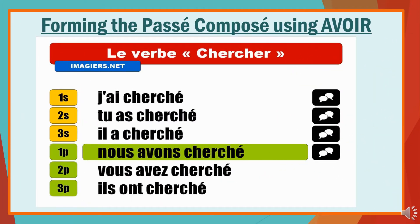Now that we've learnt how to form the participle as well as the exceptions, most verbs form their passé composé using avoir as the auxiliary. Let's try with chercher — a regular -er verb meaning to search or look for something. Its participle is cherché. So: j'ai cherché (I searched), tu as cherché (you searched), il a cherché (he searched), nous avons cherché (we searched), vous avez cherché (you searched), ils ont cherché (they searched).